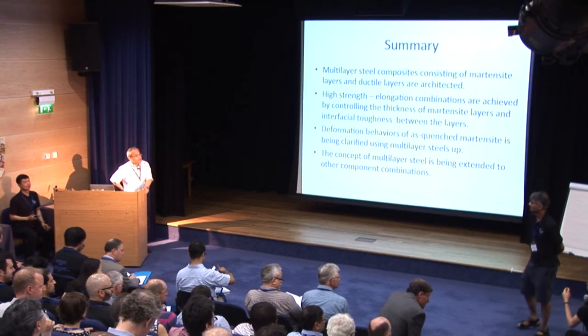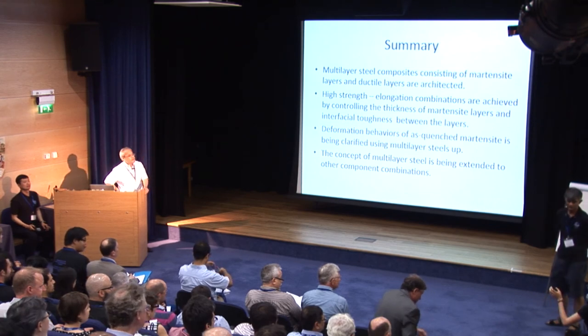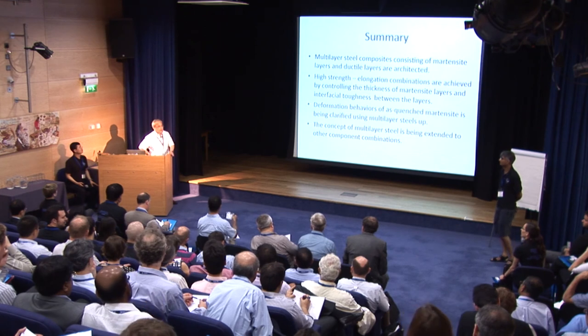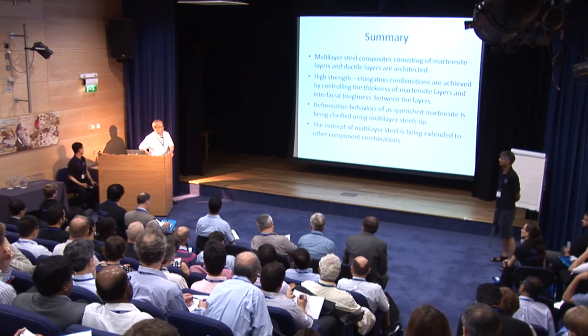Q: I was wondering how you deal with the differential volume contractions and expansions when you quench the multi-layers, because you get different volume expansions with the martensite transformation. Does that set up residual stresses between the layers that might result in easier crack propagation and delamination? A: Yes, you're right. There must be some residual stress, and we are now measuring how much residual stress exists and what its effect is on mechanical properties. Certainly there is some residual stress.